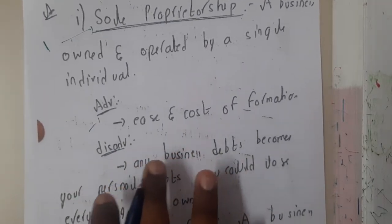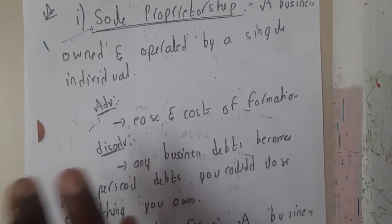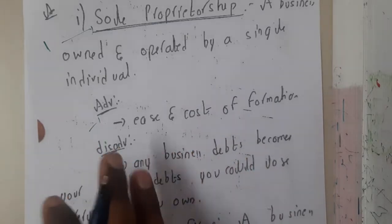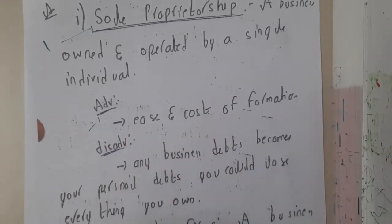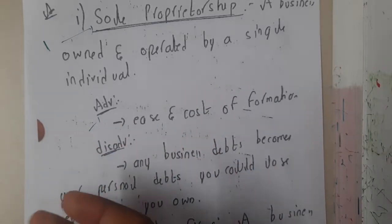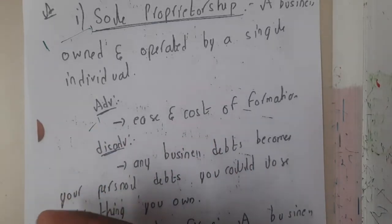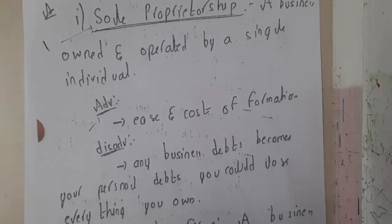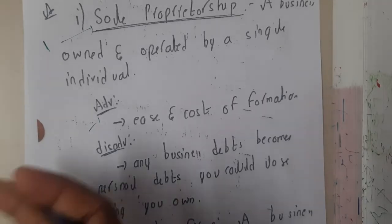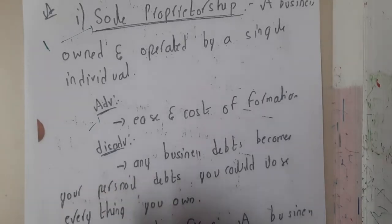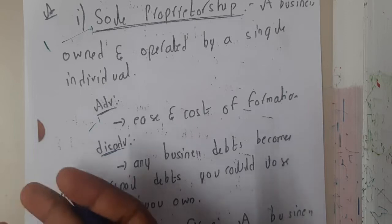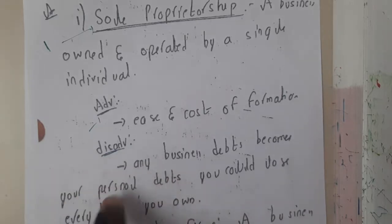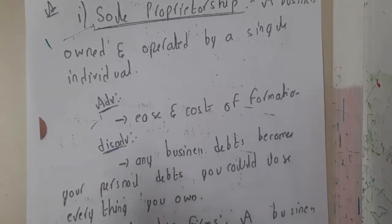The only disadvantage is that if something goes wrong, he is responsible for everything. He needs to pay the debt and might lose everything he has, because when someone starts a company they invest their whole savings into it. So if something goes wrong, it will be a huge disaster for him.